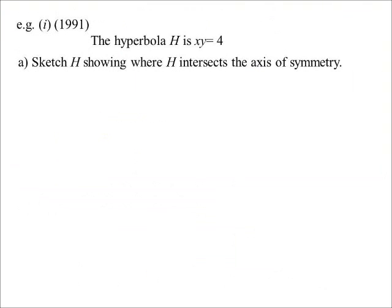Let's have a look at a very symmetric question. Seeing we're talking about the hyperbola, which is a wonderful symmetric shape. 1991, beautiful symmetric year. Reads the same backwards and forwards. Hyperbola H is XY equals 4, they told us this particular year. The first question was simply, a bit of a gift, sketch H showing where H intersects the axis of symmetry. Oh, okay. Well, there's my hyperbola. It intersects on the line Y equals X, the axis of symmetry.